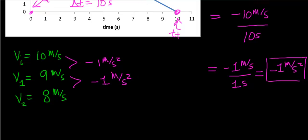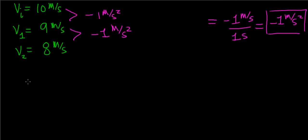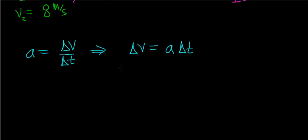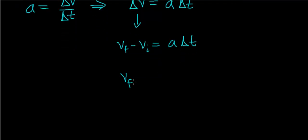We can summarize all of these results into a simple equation derived from the definition of acceleration: acceleration is the change in velocity per change in time. Rewriting this, delta V equals acceleration times delta t, and since delta V is V final minus V initial, we get V final equals V initial plus the acceleration times time.